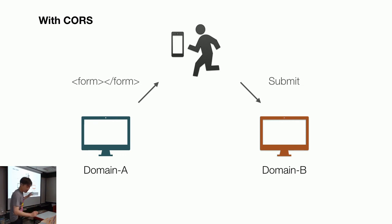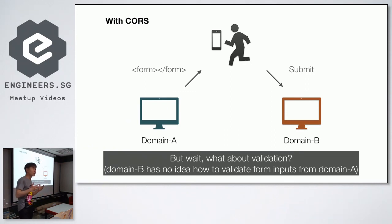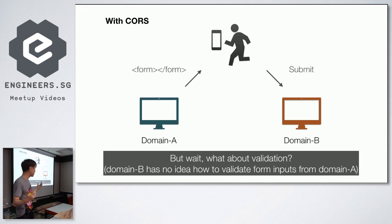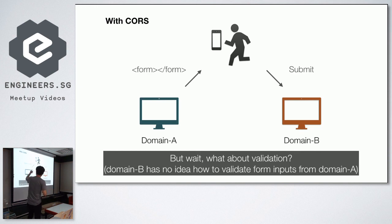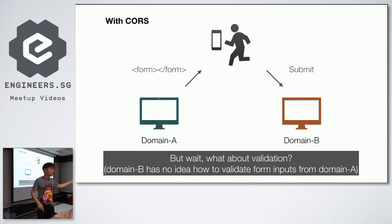But there is a problem. You need validation when you use a form — for example, checking that an email address is in the correct format, or that text length is proper. Every validation works when you submit to the same domain, because that server knows how to validate. But when you submit to a different domain, server B doesn't know how to validate.